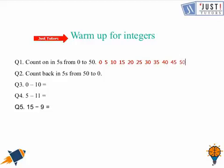In the next one we need to count back in 5s from 50 to 0. It's 50, then 45, 40, 35, 30, 25, 20, 15, 10, 5, and 0. It's like the 5 times table in reverse order.